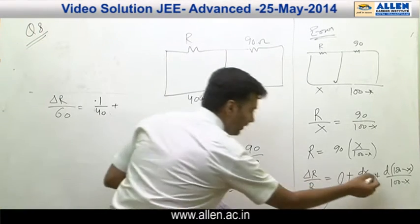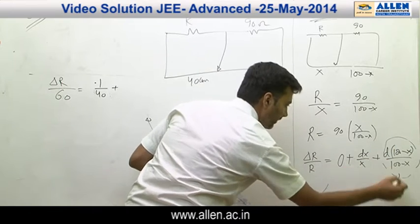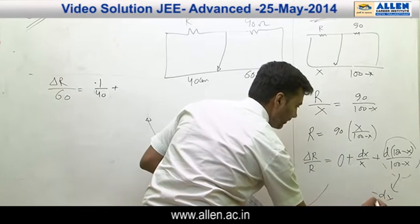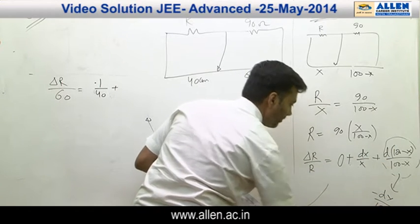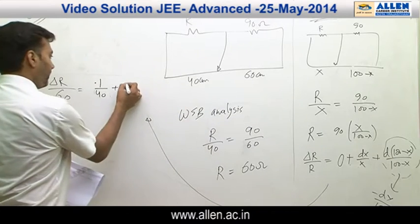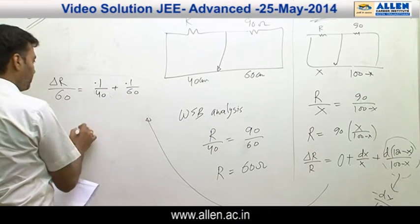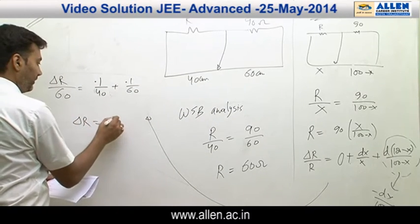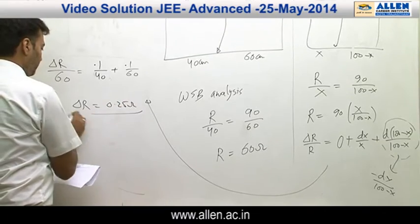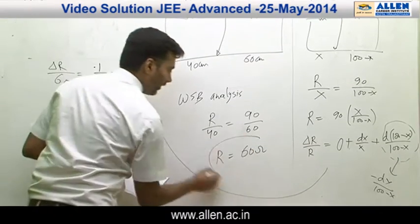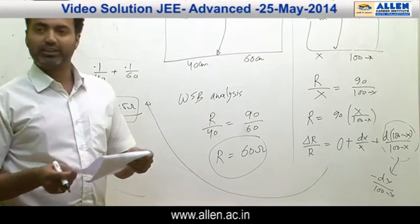The other part can further be simplified to say minus dx upon 100 minus x. Again you get 0.1 upon 60. On solving you have delta R as 0.25 ohms, and so is your answer. That is option C.